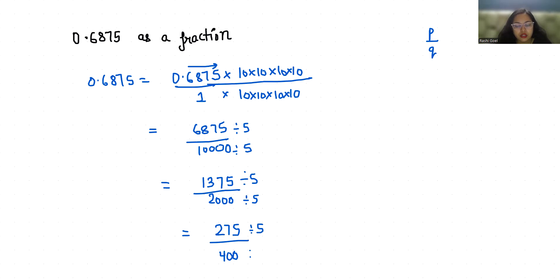With 5, it gives us 11 by 16. So 0.6875 in terms of fraction is 11 by 16.